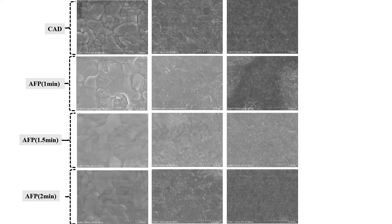We then analyzed the morphology by comparing SEM images of conventional anti-solvent dripping and the anti-solvent fumigation process for different times. We found that for 1.5 minutes of fumigation, we have very large grain size with reduced grain boundaries and smooth morphology, as seen when comparing the CAD method and the AFP for 1.5 minutes.